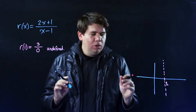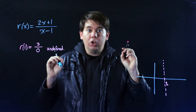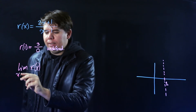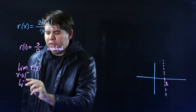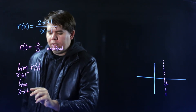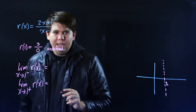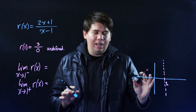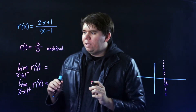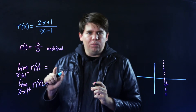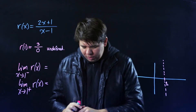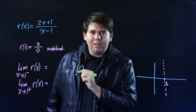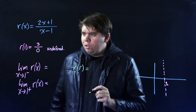But what happens when we approach 1? We want to know the limit of our rational function as x approaches 1 from the left, and the limit as x approaches 1 from the right. To think about the left-hand limit, I'm going to plug in something a little bit smaller than 1.